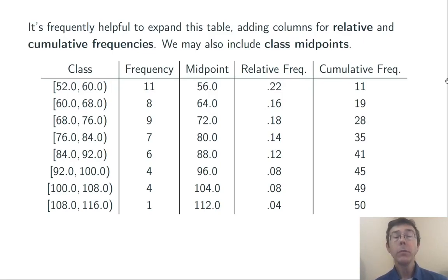We compute cumulative frequency for each interval by adding the frequencies for that interval and all the ones that come before. So, the first interval from 52 to 60 has a cumulative frequency of 11, the same as the frequency. The next class from 60 to 68 has a cumulative frequency of 19.